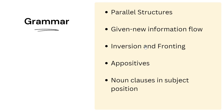If you read the grading rubrics for this test — I'll link to them below — not only do they want a strong and well-developed argument, but they also expect correct grammar with not too many mistakes, and fairly sophisticated grammar. They specifically mention things like parallel structures, given-new information flow, inversion and fronting, appositives, and noun clauses in the subject position. I'm not going to turn this into a grammar lesson, but I'll put a couple of links in the video description and I'll show you some examples in just a moment.